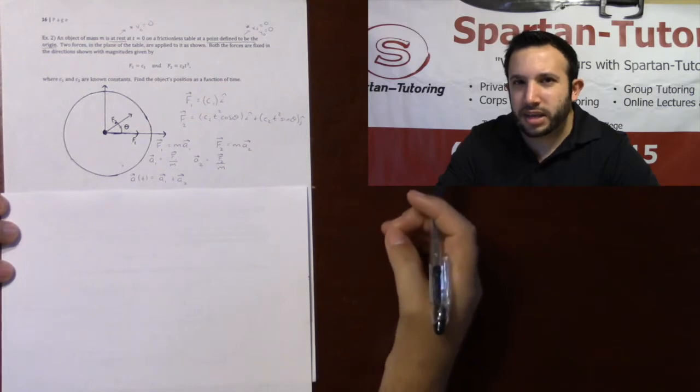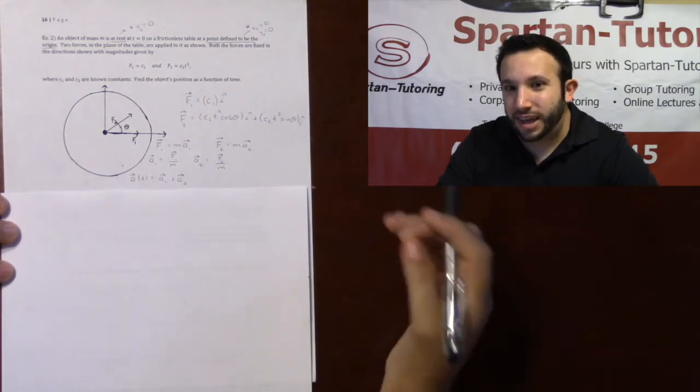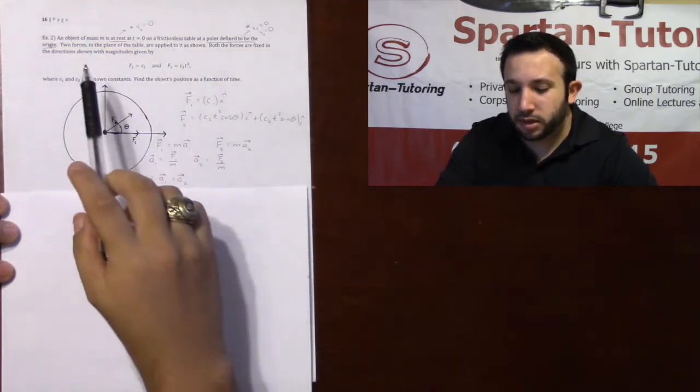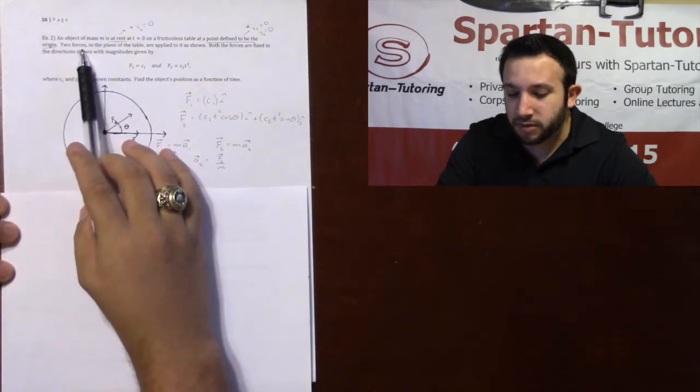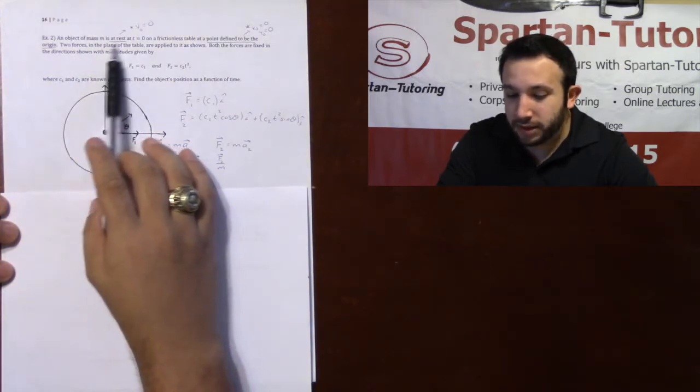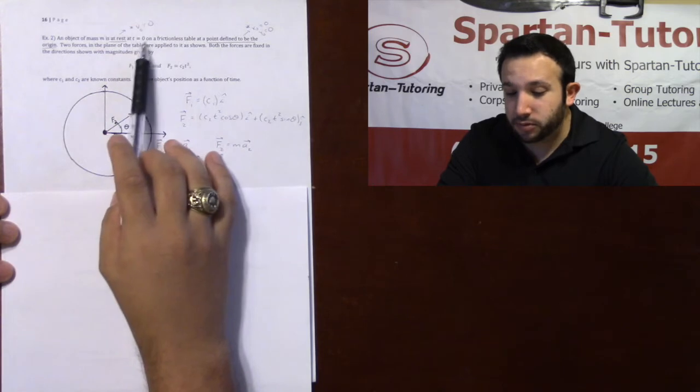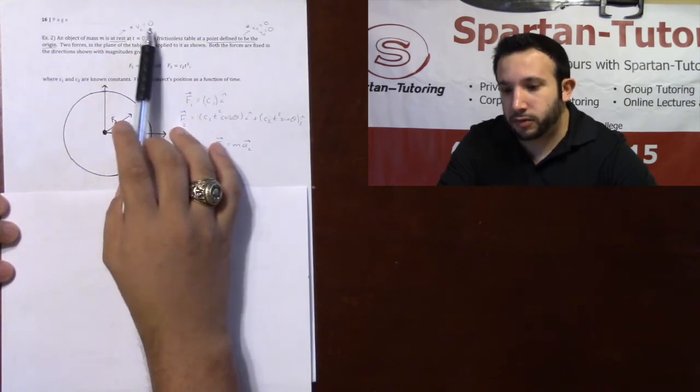Howdy. Let's take a look at another example that deals with forces and kinematics. So taking a look at number two, it says that an object of mass m is at rest. The fact that it's at rest at t equals zero means that your initial velocity is zero.